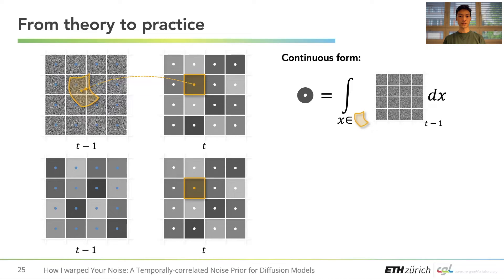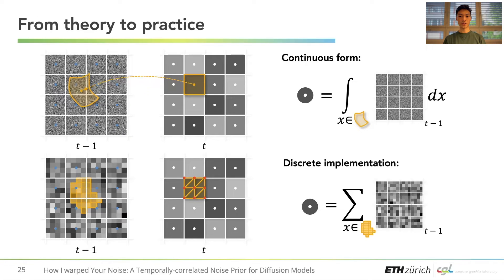In practice, we simulate a continuous field by a discrete higher resolution noise. A pixel shape is triangularized, and warped back in time to obtain an approximation of the area covered by it using rasterization. The integral effectively becomes a sum.